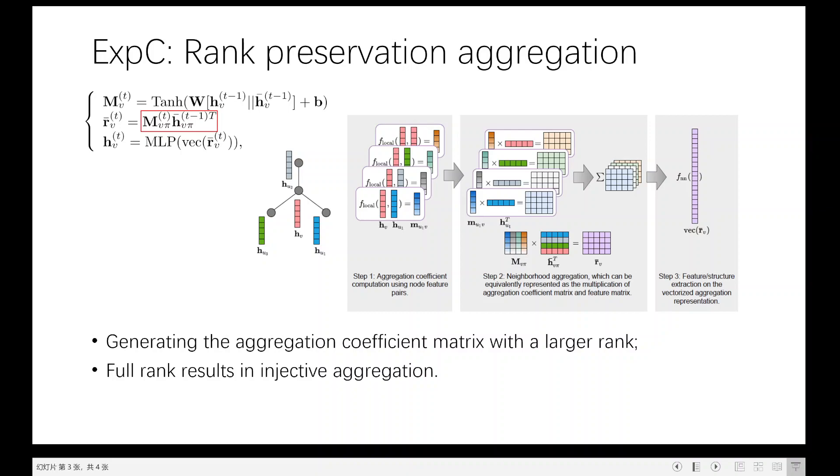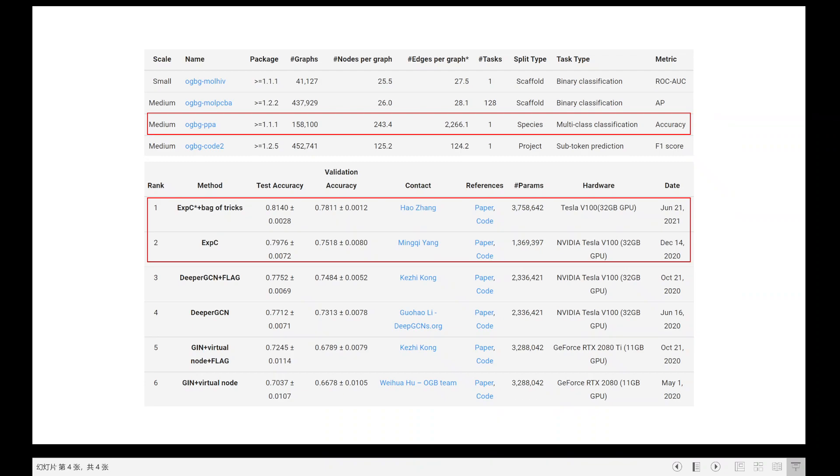Our model is quite powerful on graphs with dense connections as dense connection graph means the aggregation operation on it needs to aggregate more elements. Therefore, it requires more powerful aggregations. OGB PPA is such a dense connection benchmark. The expanding C model achieves the highest classification accuracy on it.